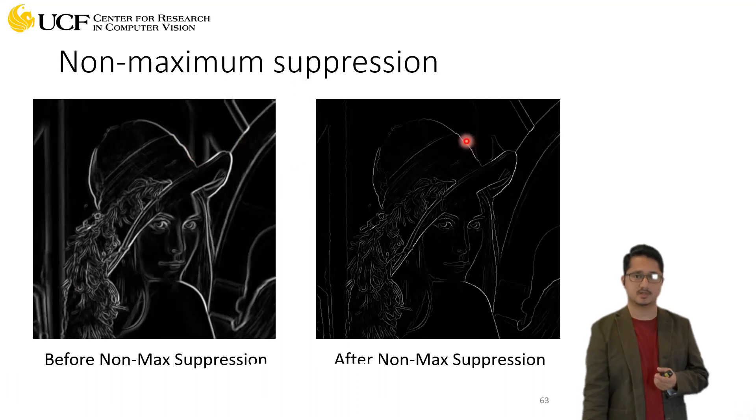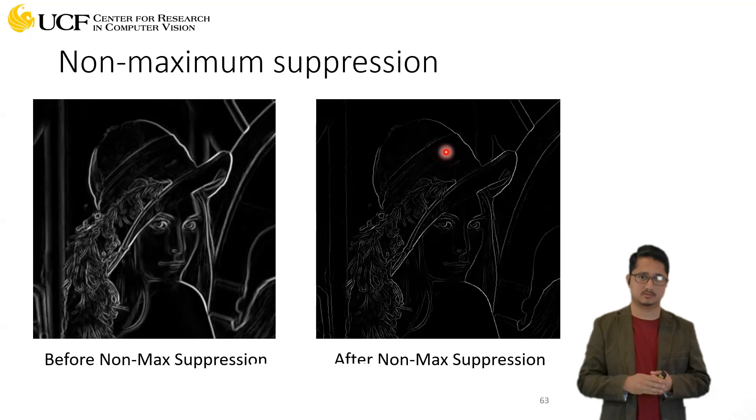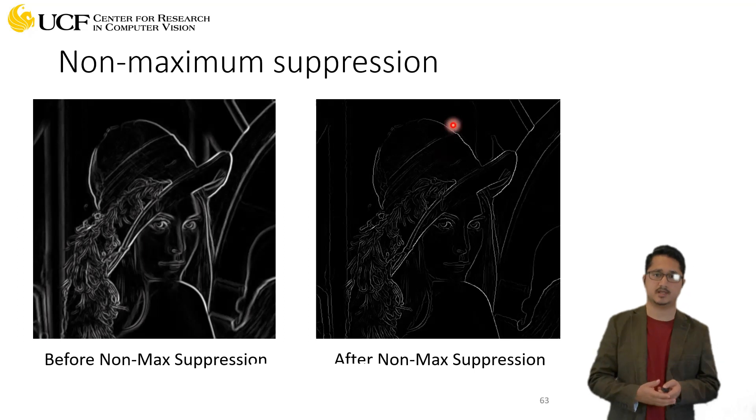So what happened is because this is the edge direction, so the normal will be in this direction. If you look in this direction, then only one of the pixels will be called an edge - you will suppress all the others. Okay, so that's one additional step we have in Canny edge detection.